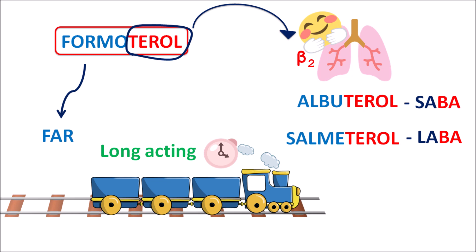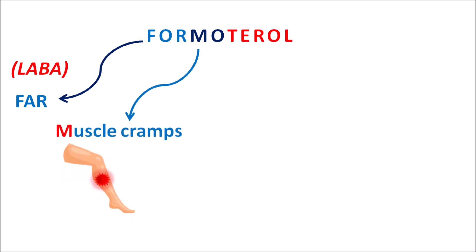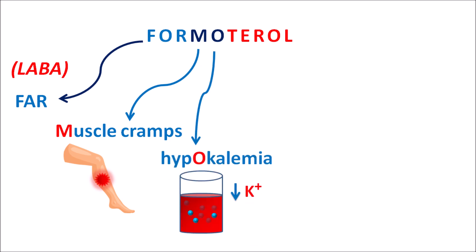Formoterol is also a long-acting drug classified as LABA. We can also remember the side effects of Formoterol from the name of this drug. The prefix 'for' can be remembered as 'four' — it is a long-acting beta-2 agonist. The letter M can be remembered as muscle cramps. The letter O can be remembered as hypokalemia, so potassium levels are reduced, producing hypokalemia resulting in muscle cramps.